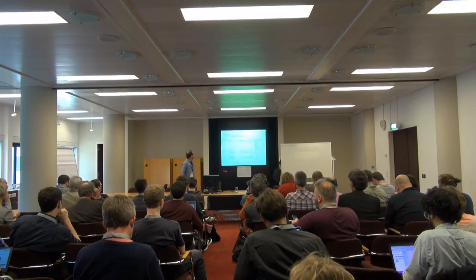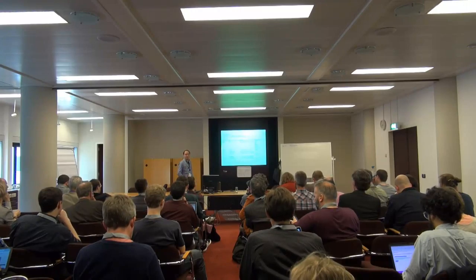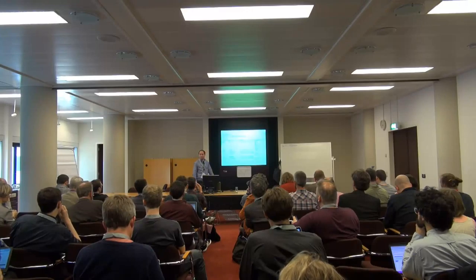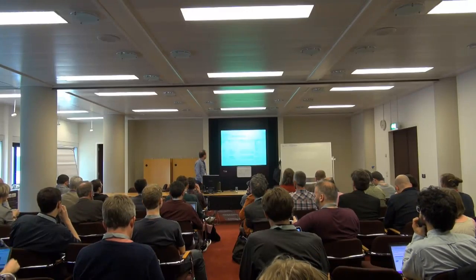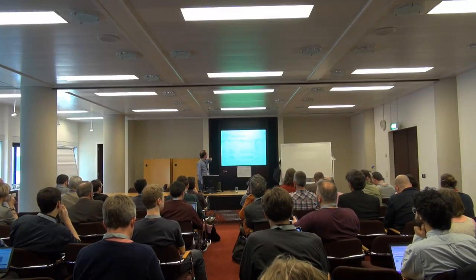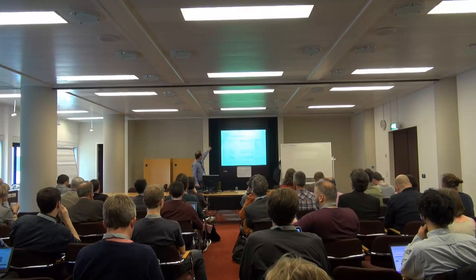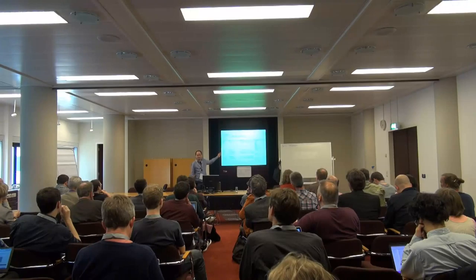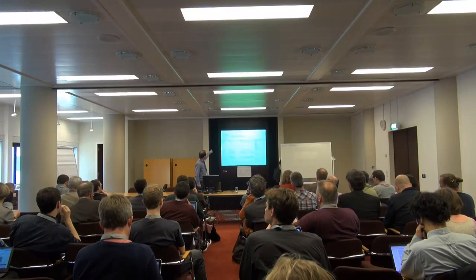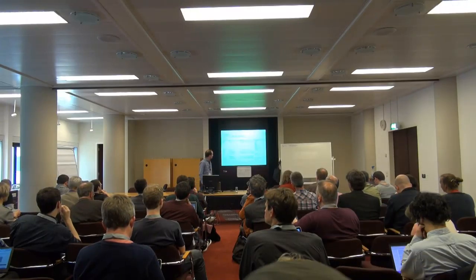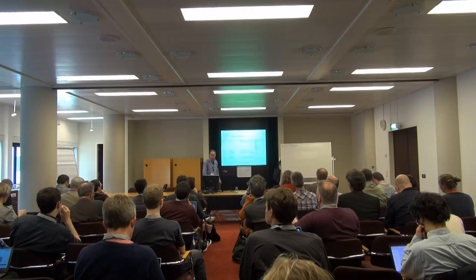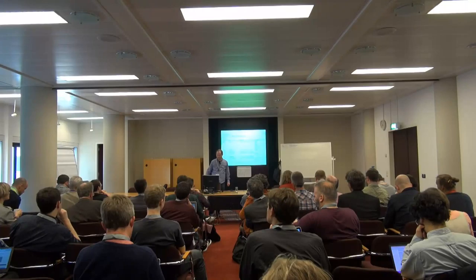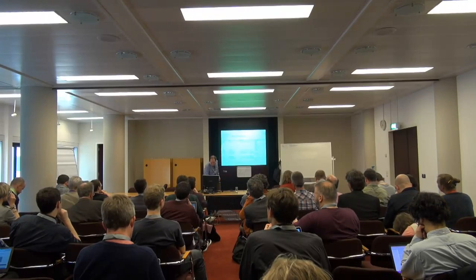We also have properties. Items are with Q, properties are with P. For example, place of birth — quite useful for people. It has the same structure as an item: you still have the label, the description, and possible aliases. Especially for date of birth you have all these abbreviations. And of course you have it in multiple languages, because everything is multilingual. There's no such thing as monolingual on Wikidata.